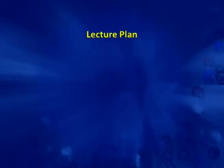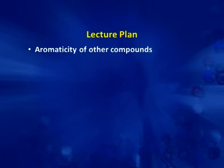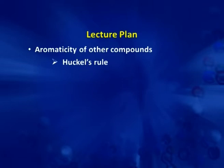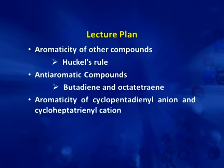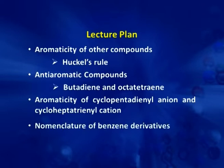In our topic arenes and aromaticity, last time we discussed the structure of benzene, stability of this ring, and the effect of this stability on its chemical properties. In today's lecture we will discuss other aromatic compounds other than benzenoid compounds. We will see the structural features which make these compounds aromatic, including discussion of Hückel's rule, and then we will discuss anti-aromatic compounds which includes cyclobutadiene and cyclooctatetraene. Then we will discuss aromaticity of cyclopentadienyl anion and cycloheptatrienyl cation, and nomenclature of benzene derivatives.